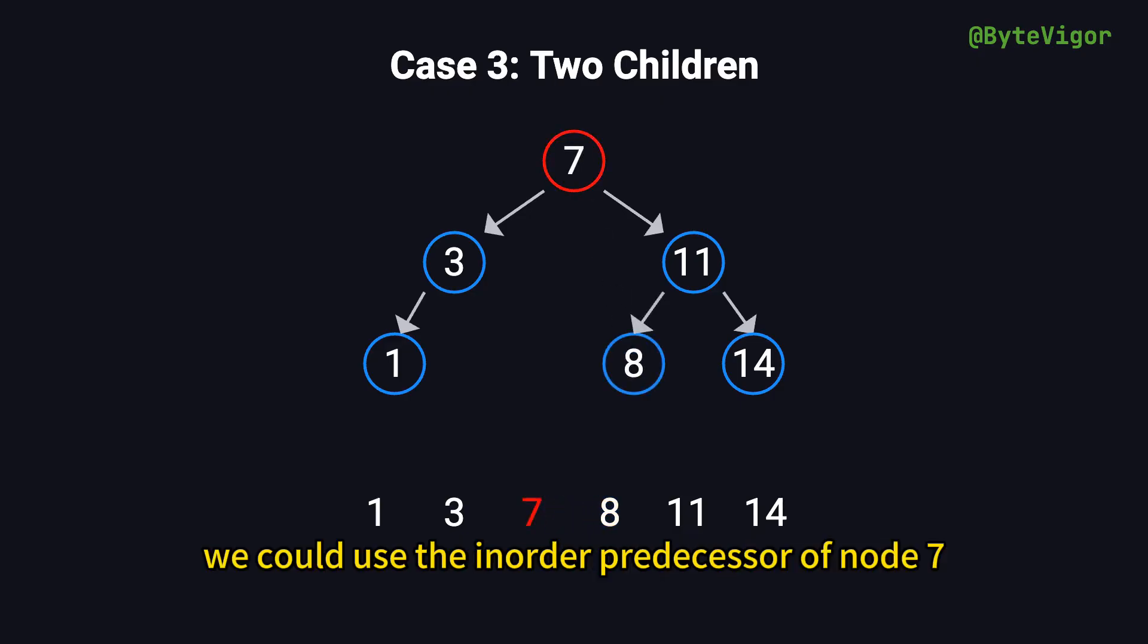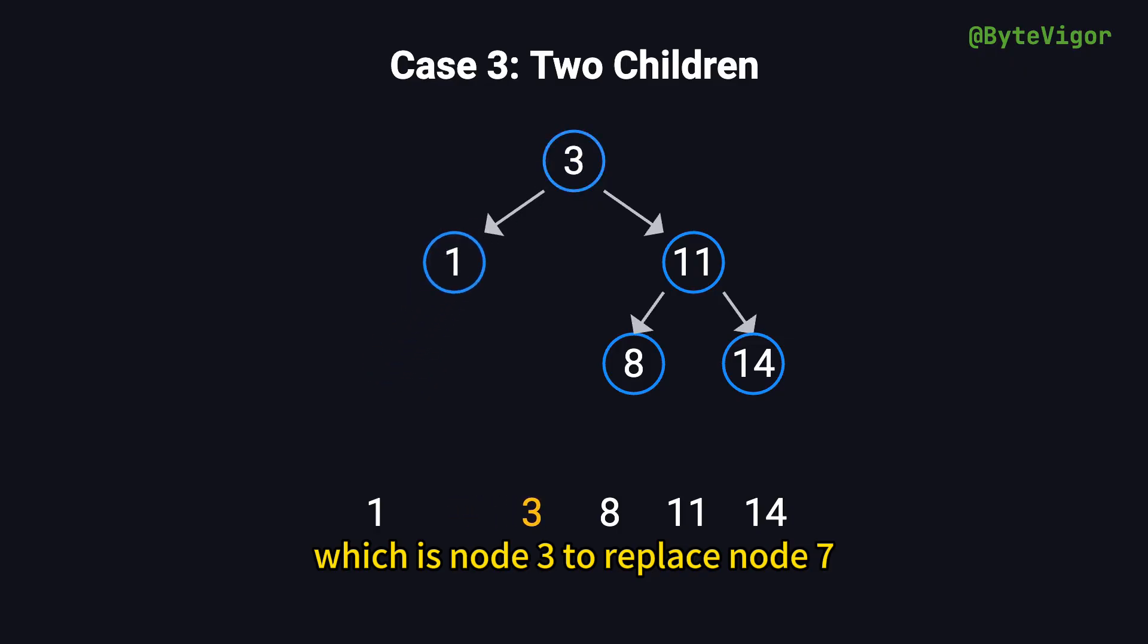Alternatively, we could use the in-order predecessor of node 7, which is node 3, to replace node 7. Both approaches effectively maintain the structure and rules of the binary search tree.